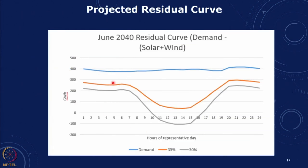When we increase the share of solar and wind, we reach a point where the electricity generated from solar and wind is more than the electricity required during that time period, making the residual load negative. The area under the curve that is negative represents the requirement for storage. As we go further, every additional unit of solar and wind has to actually go through storage before it is used in some other time period.